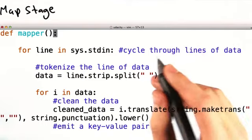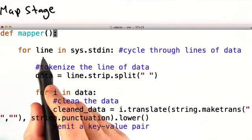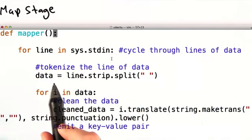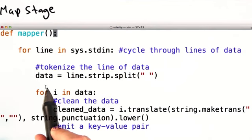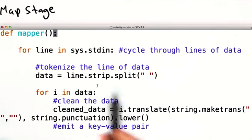What's this mapper code doing? Let's take a closer look. The mapper takes in a document. For each line of the document, it creates an array consisting of the words in that line of text. We then cycle through the words. We clean each word up, so we remove any punctuation and make all the letters lower case.